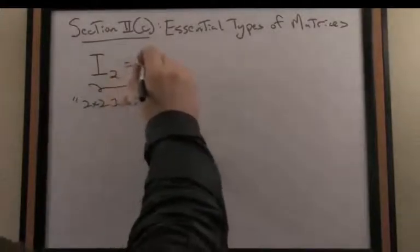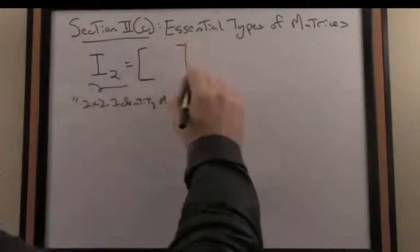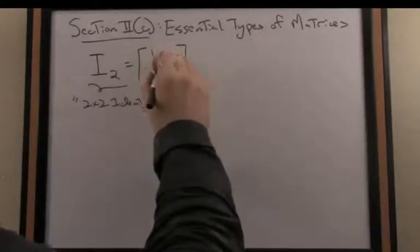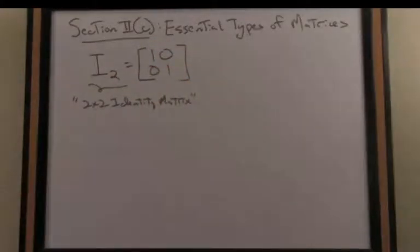By definition, the identity matrix looks like this. We place 1s on the main diagonal for the identity and 0 on all the off-diagonal elements.